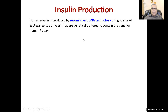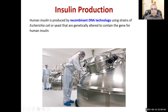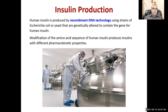A quick word on insulin production: human insulin is produced by recombinant DNA technology using strains of E. coli or yeast that have been altered to contain the gene for human insulin. Through recombinant DNA engineering, the insulin gene is inserted into the E. coli or yeast genome. You can see these big fermentation tanks — they are full of E. coli or yeast producing tons of insulin. The main challenge is purifying that insulin.